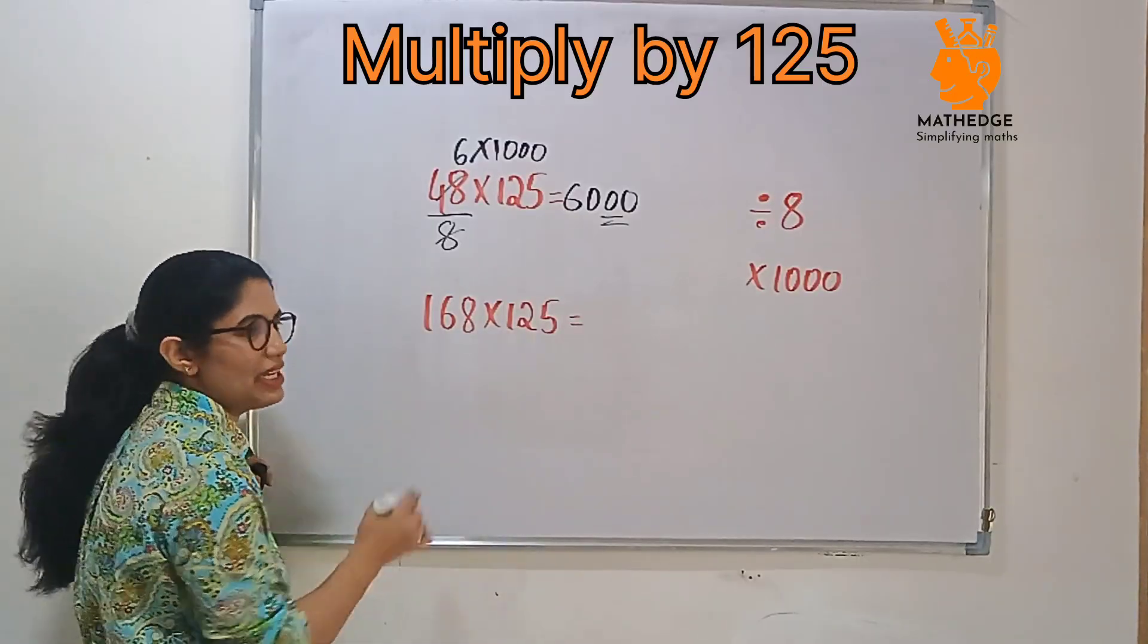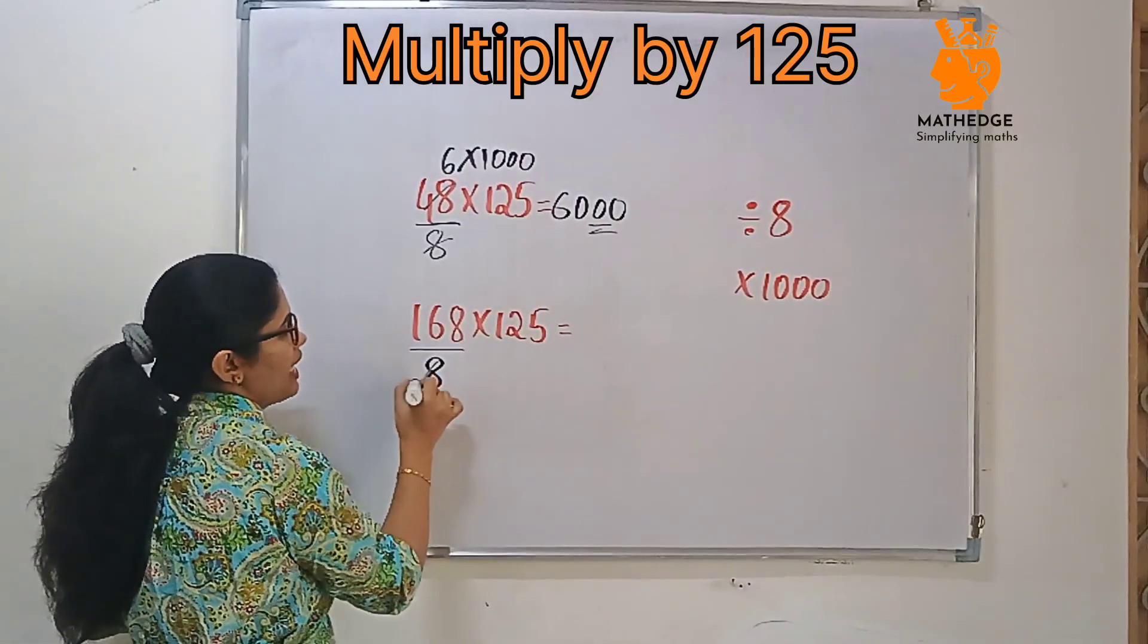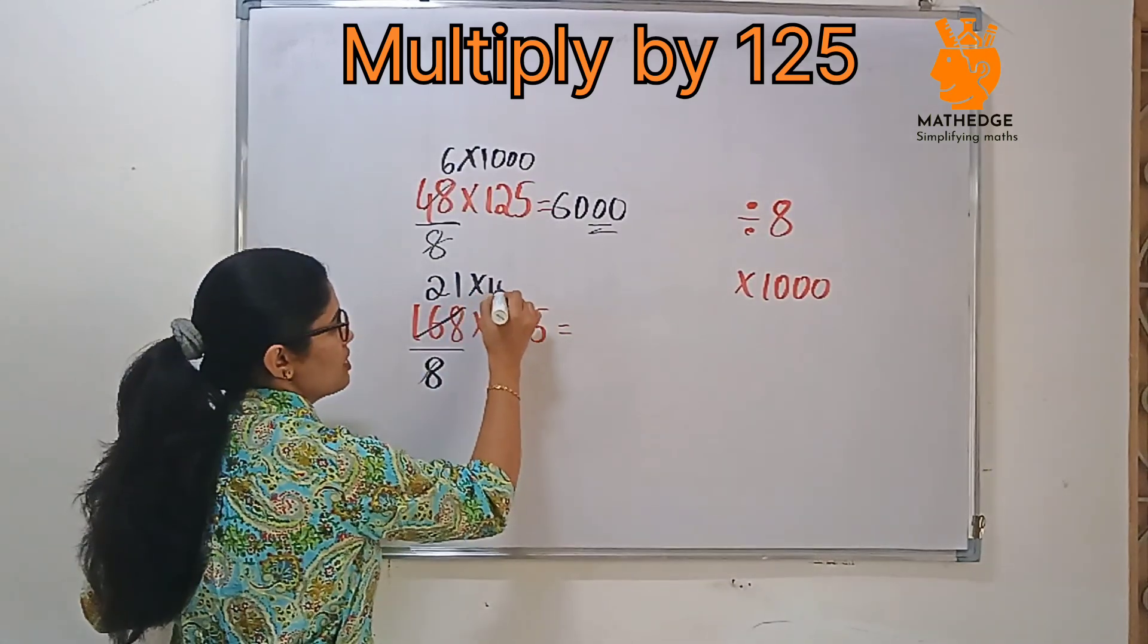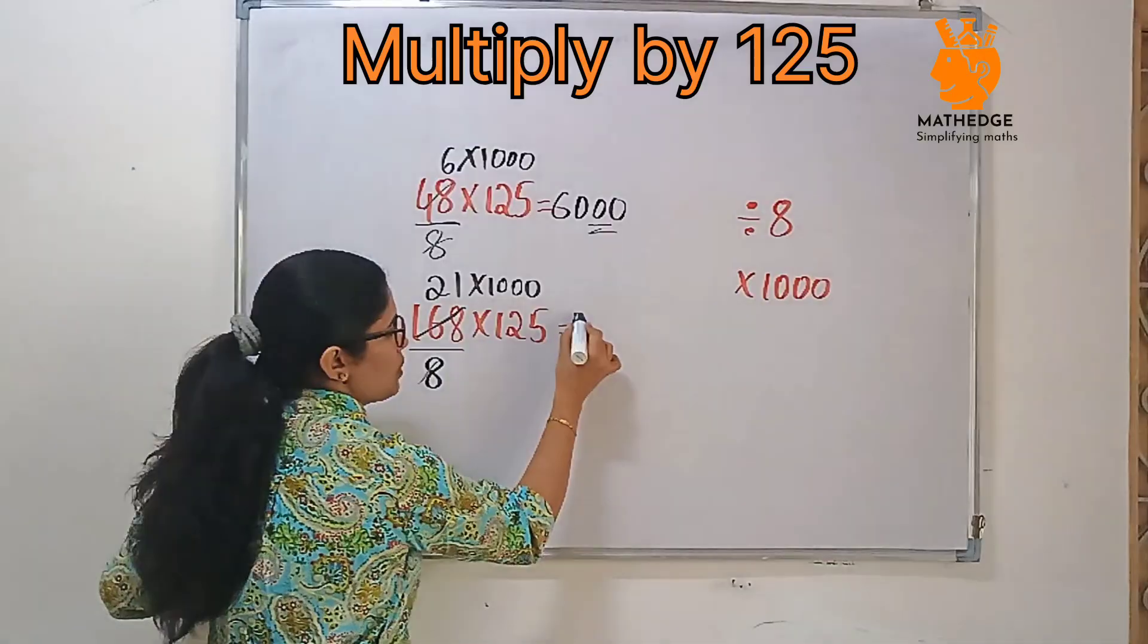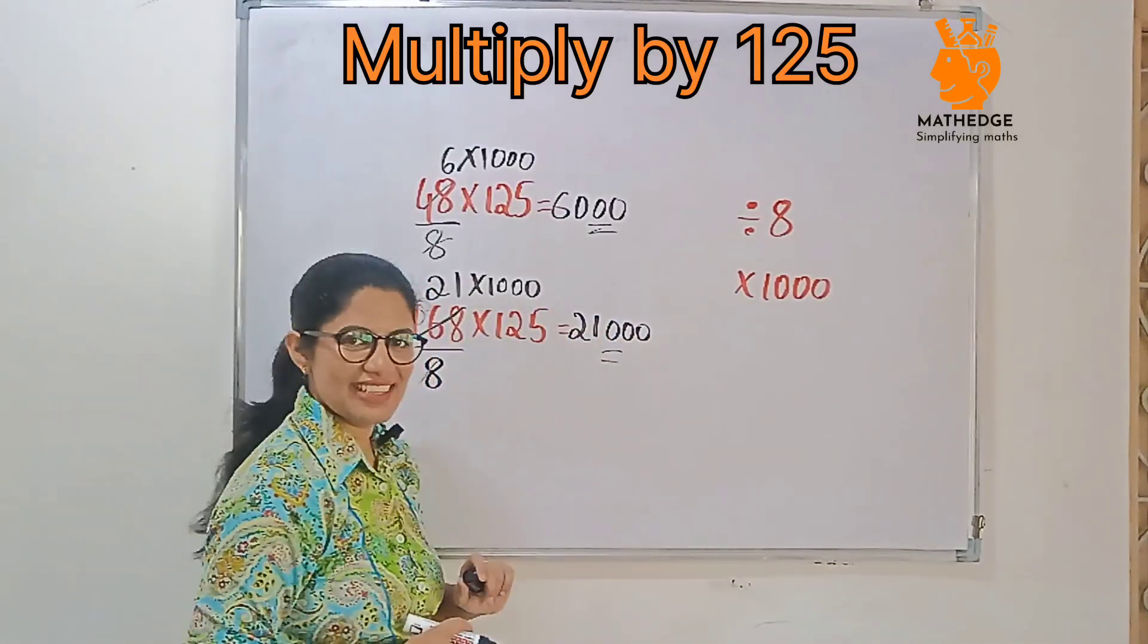Then 168 multiply by 125. Divide by 8. 8 ones, 8 twos, then 8 ones. 21. Then multiply by 1000. 21 into 1000, 21, then after that 3 zeros. 21,000. Easy right?